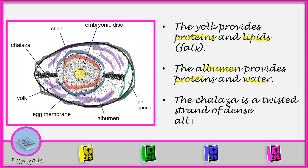Then we have the chalaza. The chalaza is twisted — it is a strand of dense albumen. This twisted strand is what we are calling the chalaza, and it is a dense albumen.